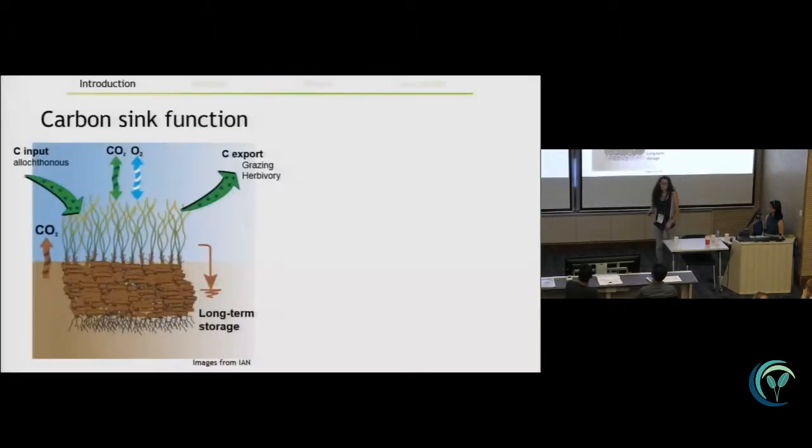So the carbon sink function occurs when the rate of carbon entry into the system through photosynthetic transformation of plant material and eventually to the sediment is greater than the rate at which this carbon leaves the system through export or respiration.